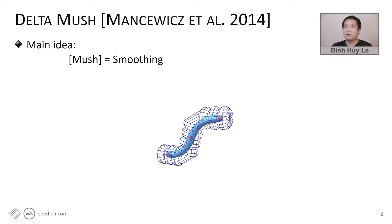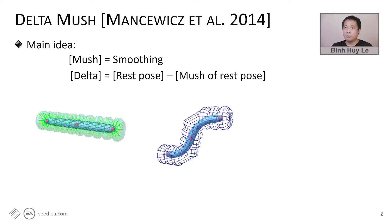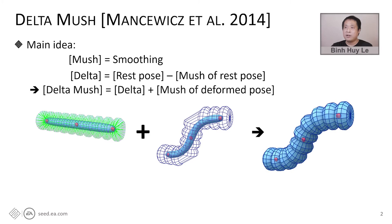First, to provide the context of our work, we will revise delta mush deformer. It uses geometry smoothing or mushing, which smooths out both global deformation and local geometry details of the model. To keep the geometry details, we compute the delta, which is the difference of the rest pose and its smooth version. And the final deformation is computed by adding the delta back to the mush of the deformed pose.